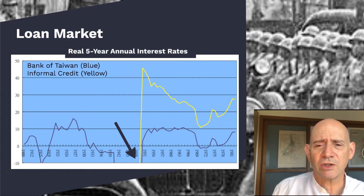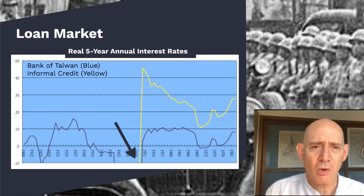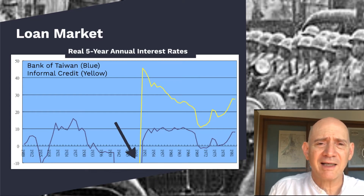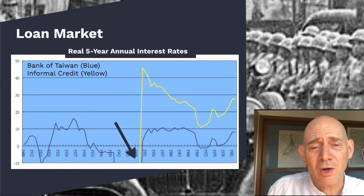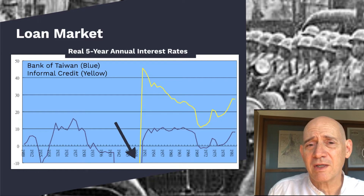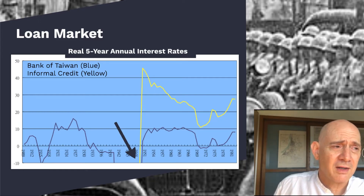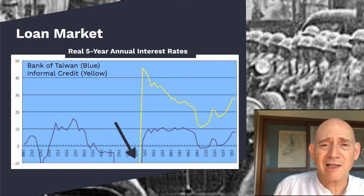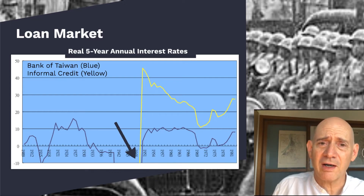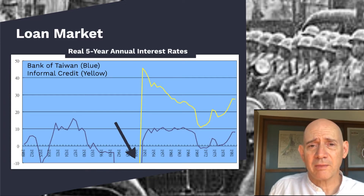What you notice here is there's this big hole in the middle — that's the hyperinflation hole. Anybody who put their money in the bank in, say, 1942, by the time five years had rolled around in 1947, they basically don't have any money left. Their real interest rate is maybe minus 90% — very bad, very low. So they lose all their money.